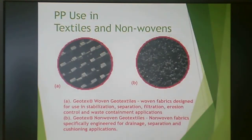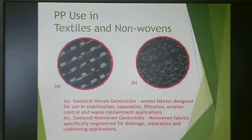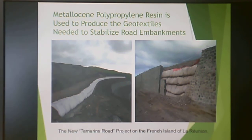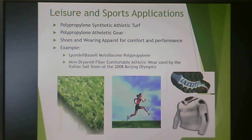Polypropylene is used a lot in textiles and non-wovens. A textile is something that is woven or knit — it has a regular structure. A non-woven is a bunch of polypropylene fibers squished together; non-woven fabrics are designed for drainage, separation, and cushioning, like baby diapers. Traditional textiles need really good structural control. One example is geotextiles used for stabilizing road embankments — anywhere there's a lot of erosion, these are used to stabilize and prevent it.